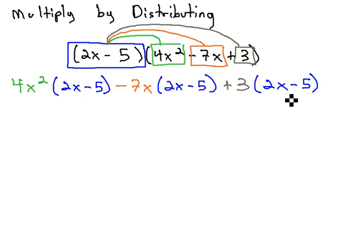We now see the 2x minus 5 being multiplied by the 4x squared minus 7x plus 3. Next, we are allowed to distribute each individual term through its little set of parentheses.